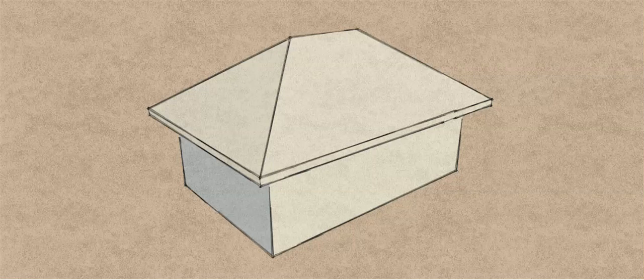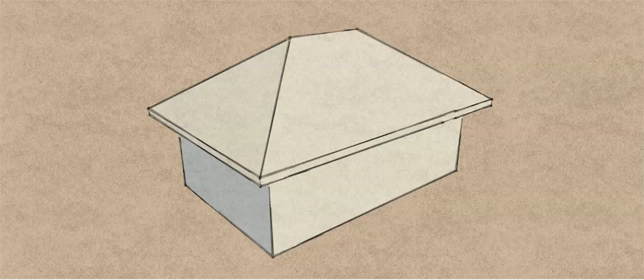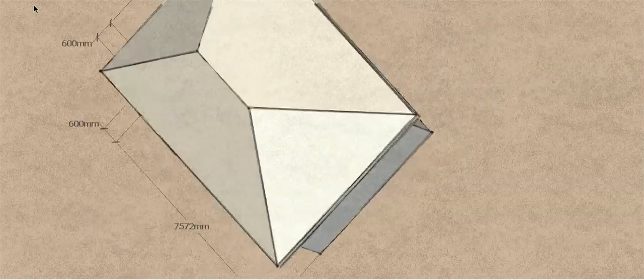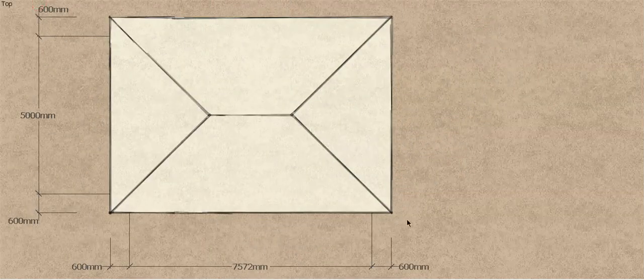G'day, welcome back to Buildsum. This is the 4th video in my estimating series. In the first three we looked at some different scenarios with ridges, and this time we're going to start looking at the hip of a hip and valley, or a broken hip and valley roof. If you have a look on the plan, our hip always bisects an external corner, generally at 45 degrees, and that's what we're going to assume in this case — this will also apply to valleys as well.